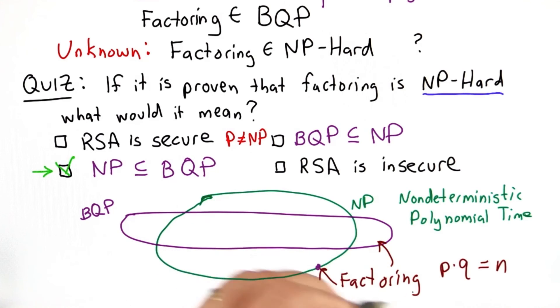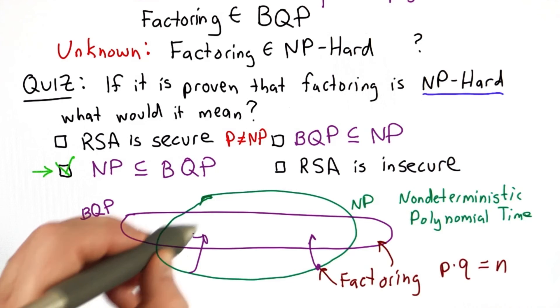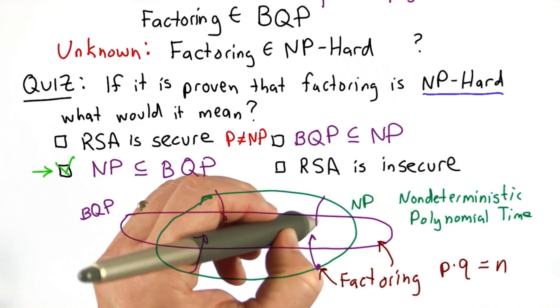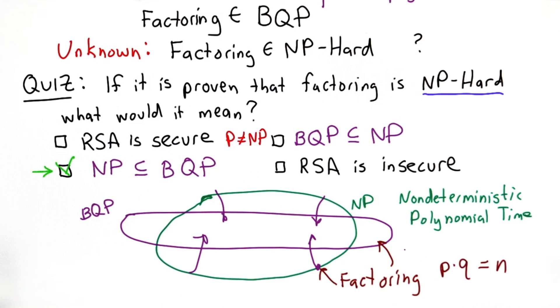It's also known to be in BQP, so that would mean that we'd have to squish everything in the circle would now be inside BQP, because there's no problem that would be harder than factoring in NP.